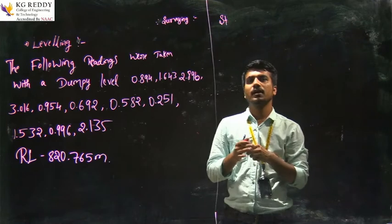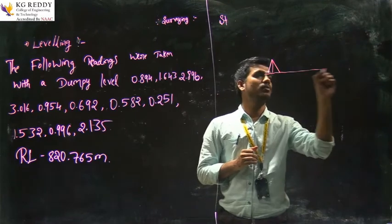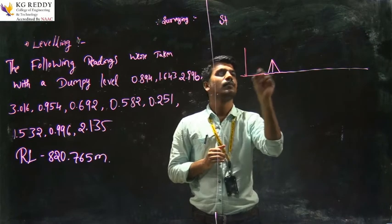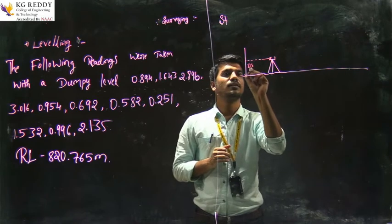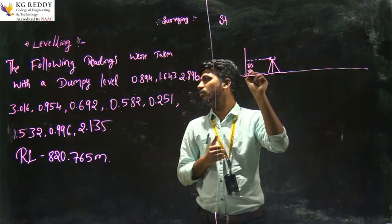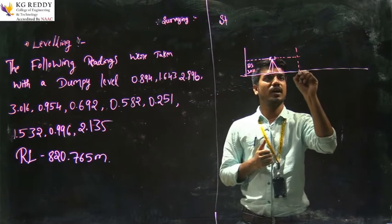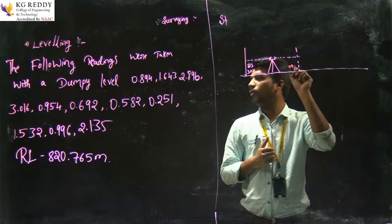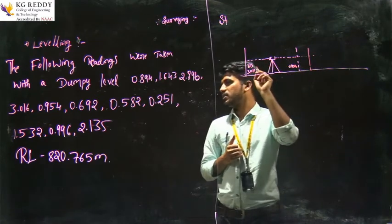How will the tabular form be? It will start with the first point as back sight. Here you are setting the instrument in field levels. The first point is back sight. The first reading is 3.016. After transiting the telescope in the forward direction, that is IS 0.954, and again continuing with IS 0.692.